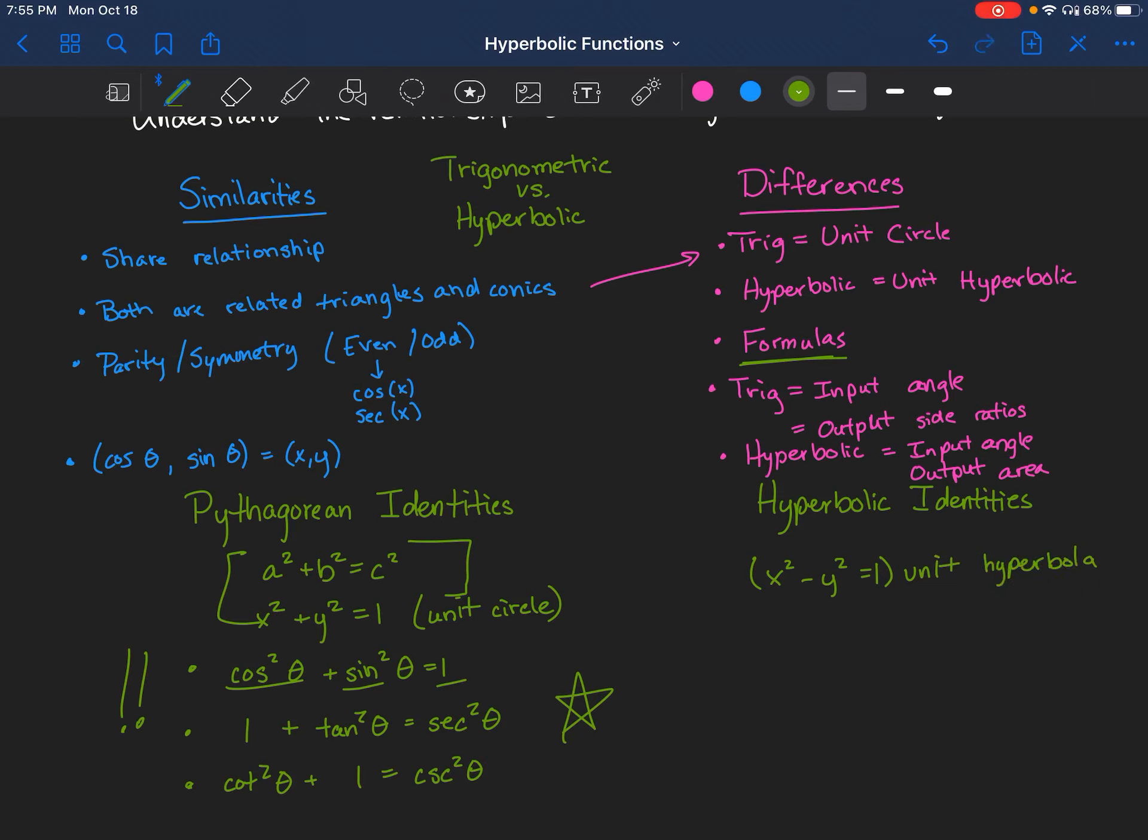So from here, I'm just going to kind of do the analogous thing. X was cosine, so I'm going to write hyperbolic cosine squared, and I'll still put a theta, minus hyperbolic sine squared theta equals one. And we're just going to follow the same kind of process.